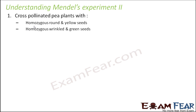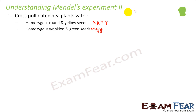He cross-pollinated pea plants with homozygous round and yellow seeds. Homozygous means both alleles are the same. The genotype of homozygous round and yellow seeds is RRYY, where round is denoted by capital R and yellow by capital Y. The genotype of homozygous wrinkled and green seeds is rryy, where wrinkled is small r and green is small y.